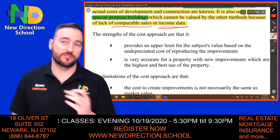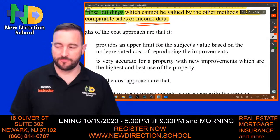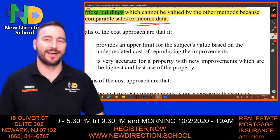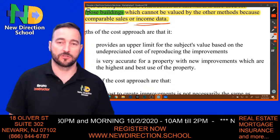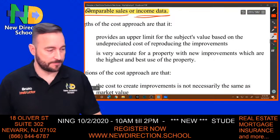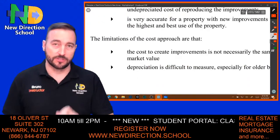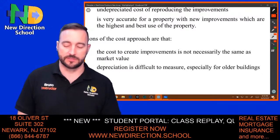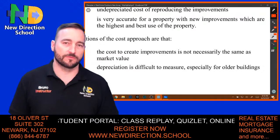The strengths of the cost approach are that it provides an upper limit for the subject's value based on undepreciated costs of reproducing the improvements. It's very accurate for property with new improvements which are the highest and best use of the property. The limitations are that the cost to create improvements is not necessarily the same as market value, and depreciation is very difficult to measure, especially for older buildings.